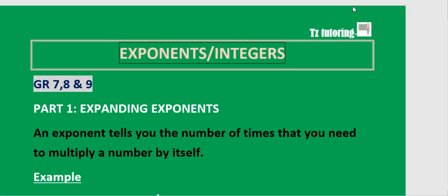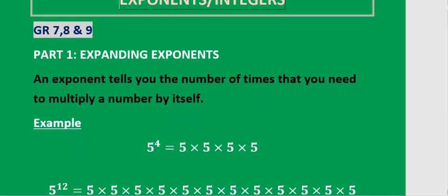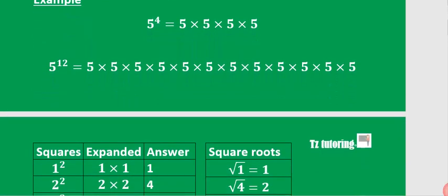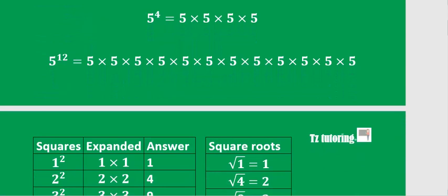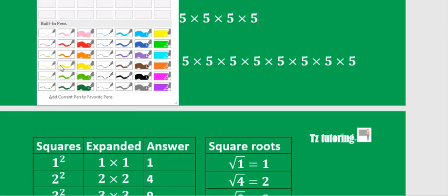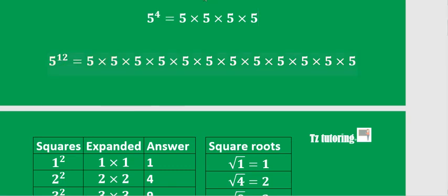Welcome to Exponents and Integers. This video is for grades 7, 8, and 9. The first thing we look at is how to expand an exponent. 5 to the power of 4 means that you need to multiply 5 by itself four times — 1, 2, 3, 4.